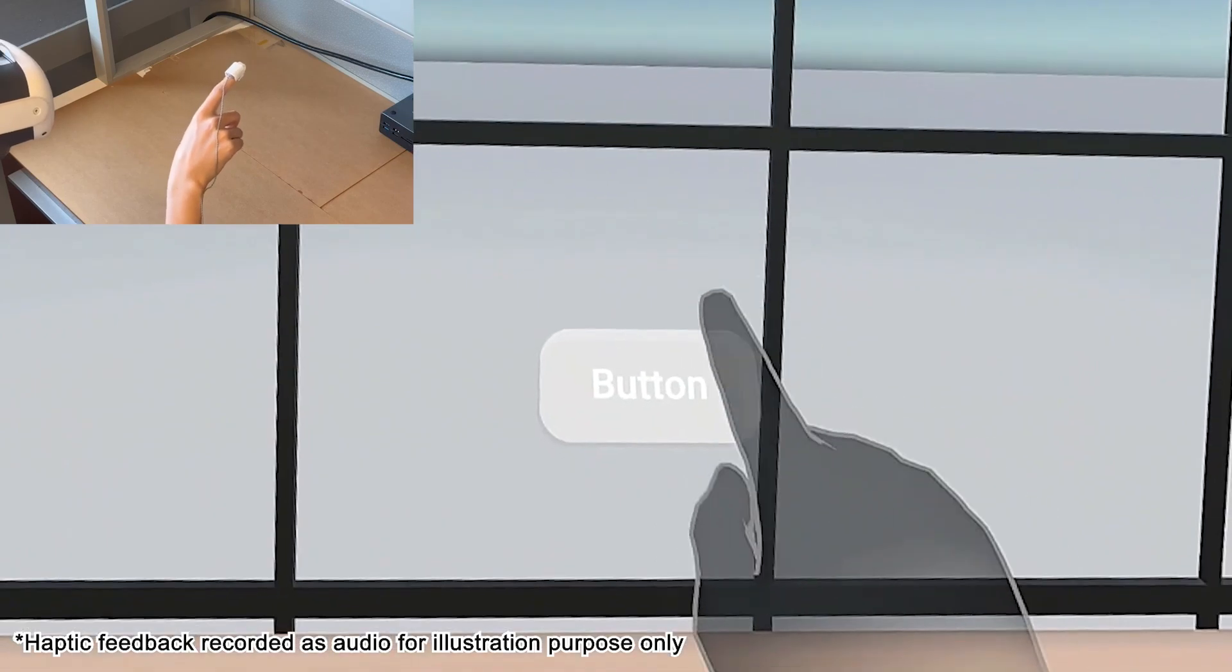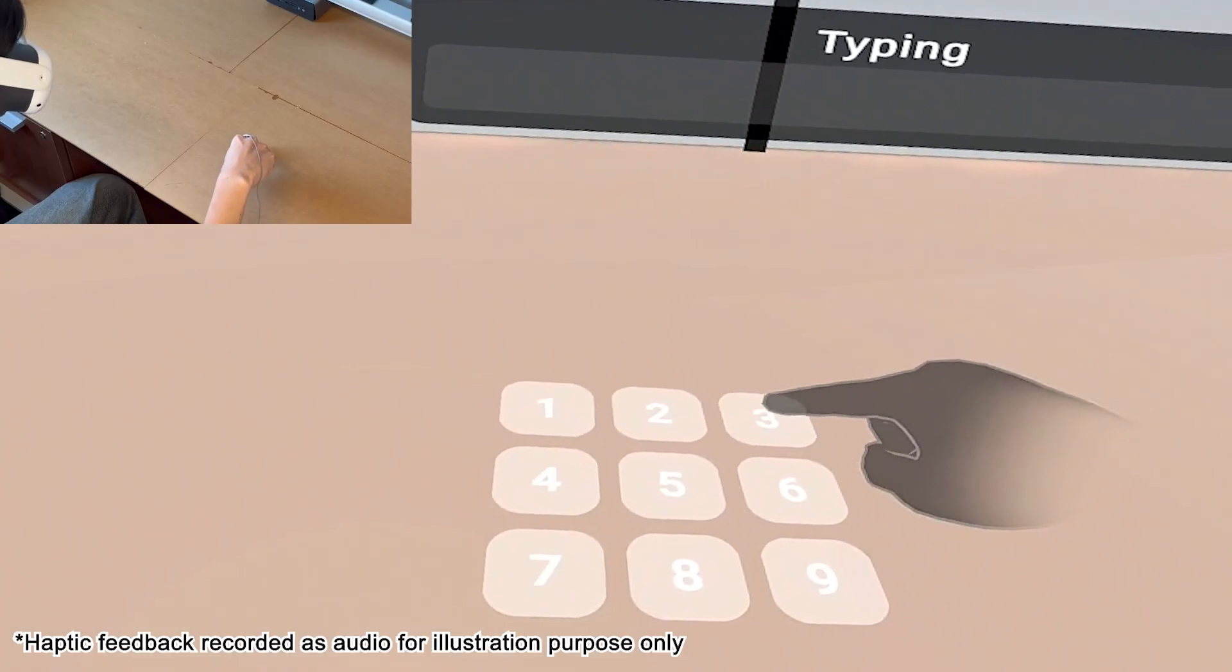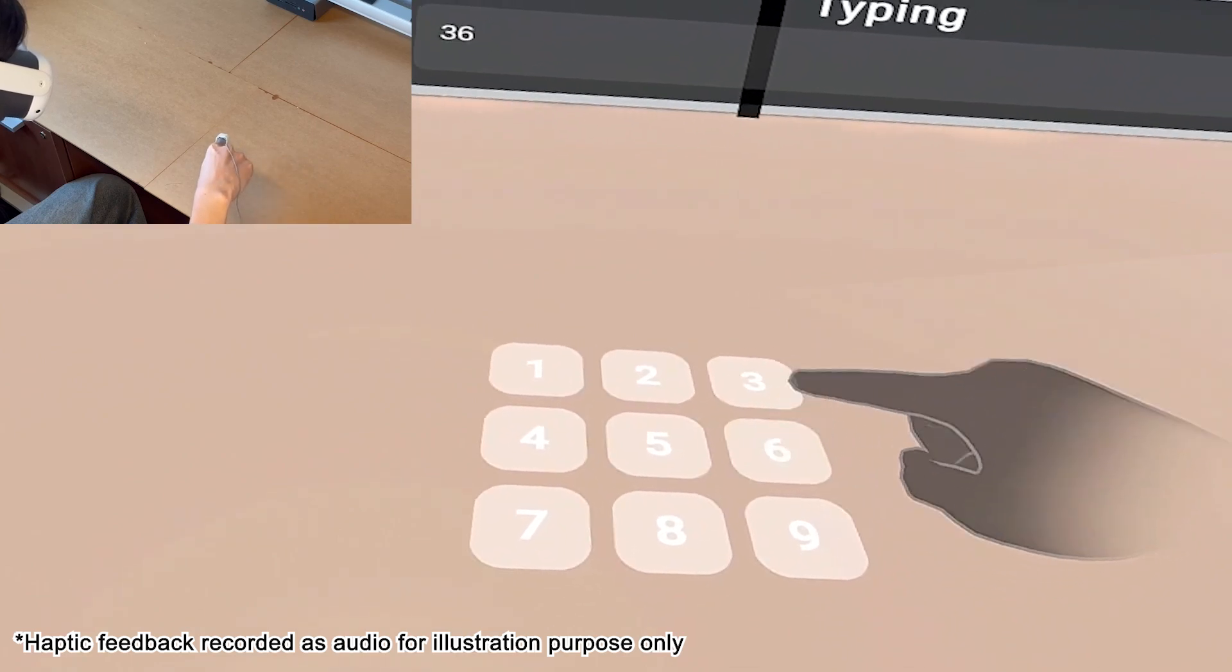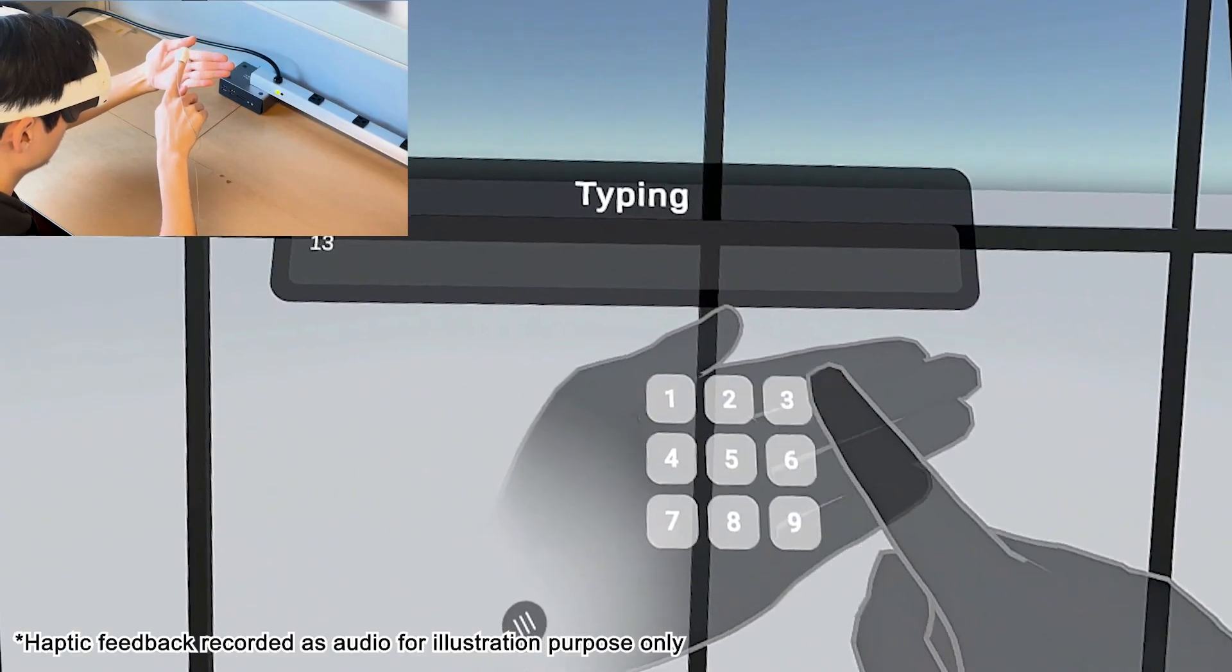The haptic coil can be triggered using tracked finger position, like this floating button. Or it can respond to real force input, such as when a user presses against a physical desktop, or when pressing against their own body.